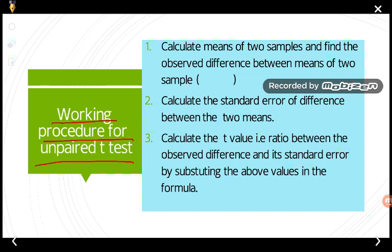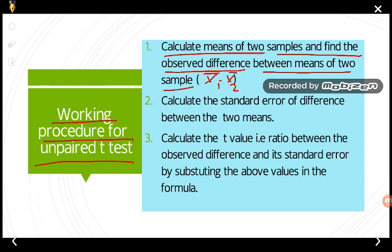In the case of the unpaired t-test, we follow five steps. Step one: calculate the mean of the two samples and find the observed difference between the means — that is, x1 bar minus x2 bar. Step two: calculate the standard error of the difference between the two sample means.